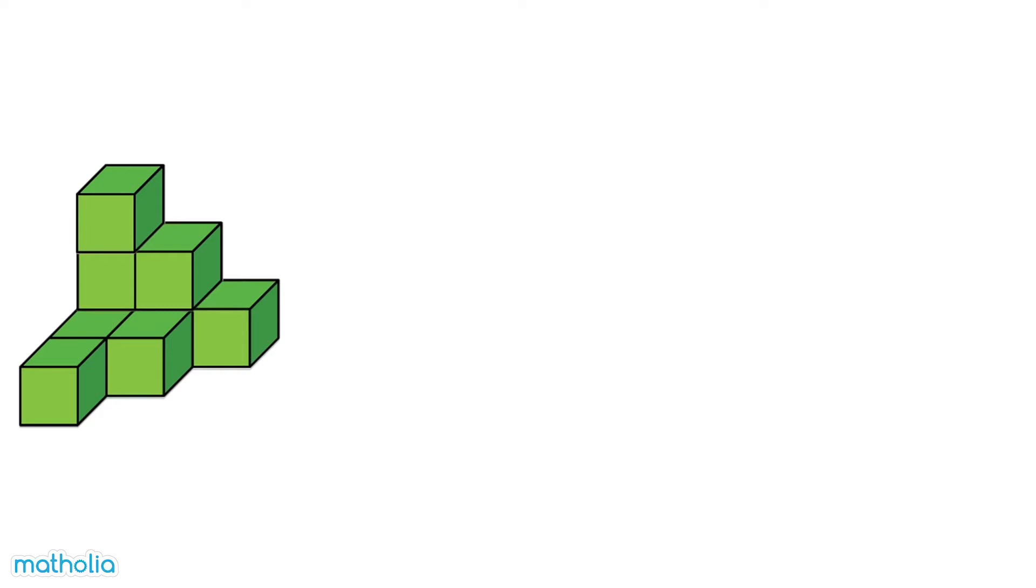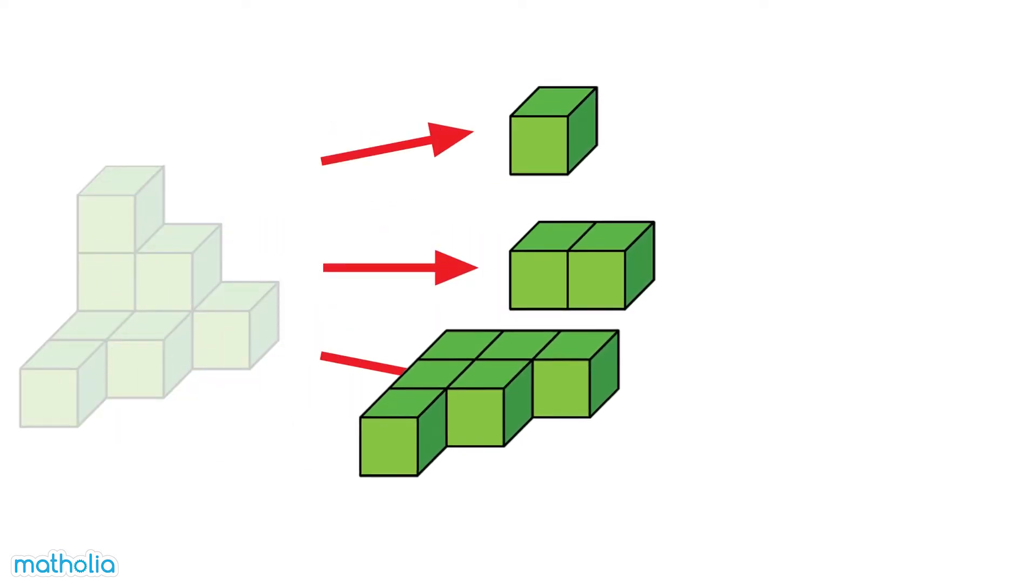Find the volume of the solid. Separate the solid into rows and count the cubes in each row. 1 and 2 and 6 make 9. The solid is made up of 9 unit cubes. Its volume is 9 cubic units.